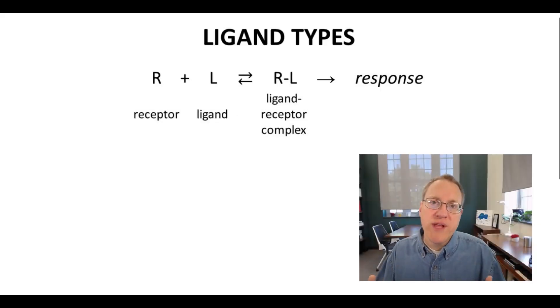Receptors are proteins that are involved in biological pathways. Ligands are molecules that bind to receptors, and sometimes the consequence of binding can turn on a receptor or turn off the receptor and the corresponding response.